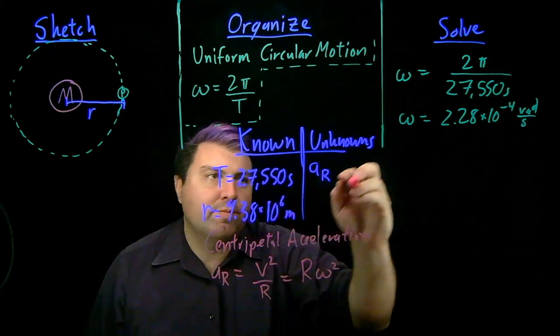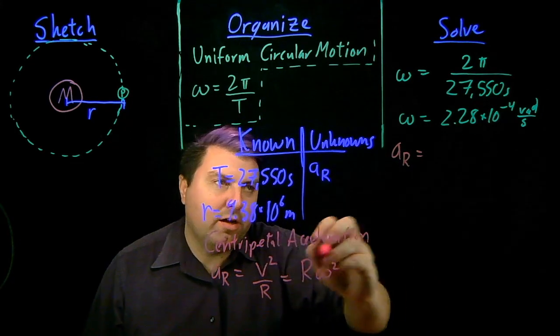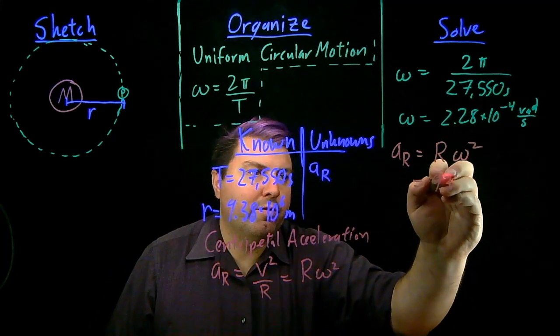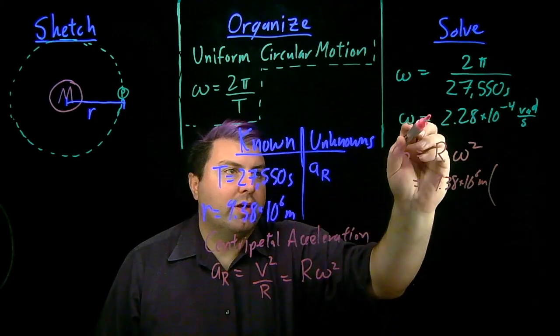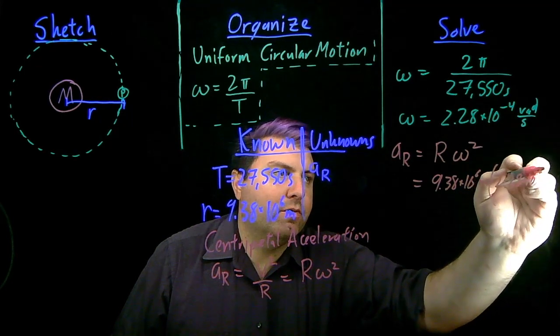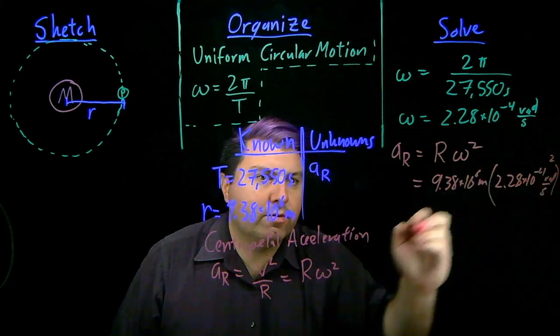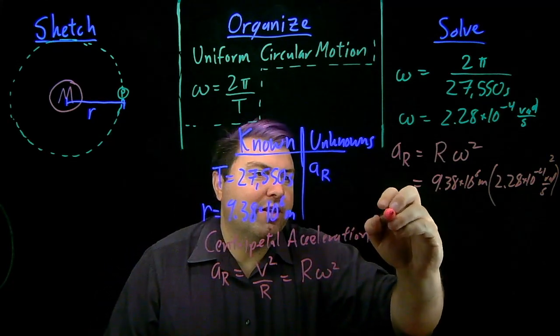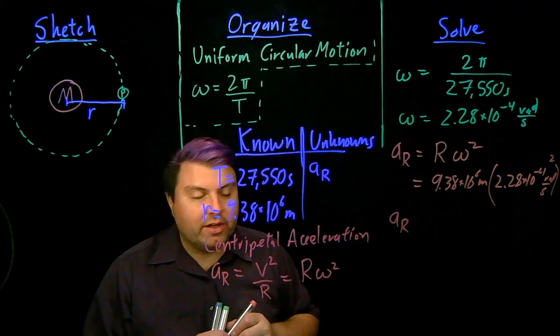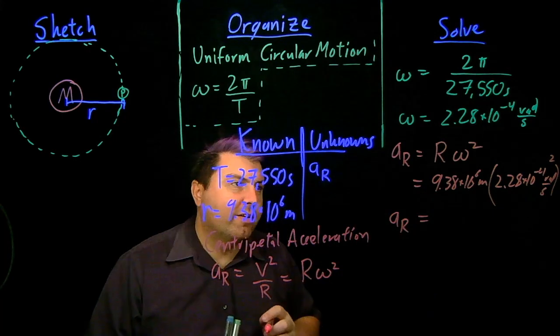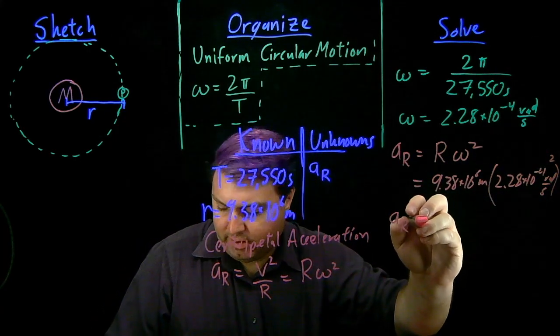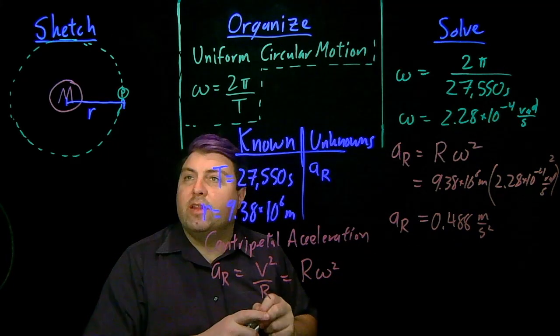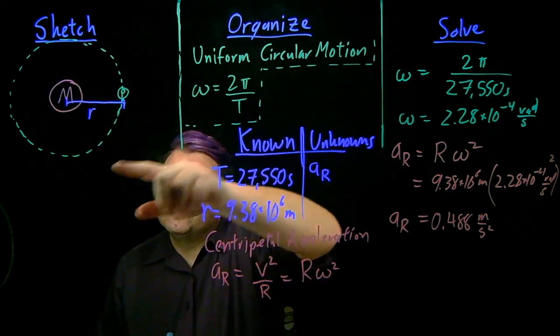Now that we have this, we can use our ar equation. We don't have to use this part at all. We can just use r times omega squared. So now we can plug in our r, 9.38 times 10 to the 6 meters. And now we can plug in our omega, 2.28 times 10 to the negative 4 radians per second quantity squared. Now we can then go about solving this. So if you want to, you can take a look in your calculator and try to calculate it. But we've already cooked it up a little bit. So we have then 0.488 meters per second squared, roughly 1/20th of the gravity that you experience on the earth is what is pulling Phobos around Mars.